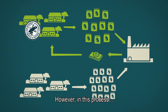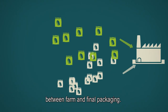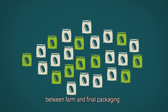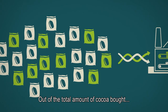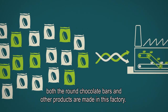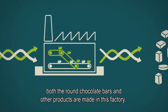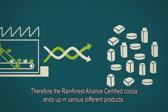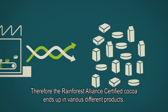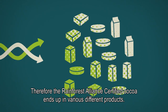However, in this process, the certified and non-certified cocoa get mixed somewhere between farm and final packaging. Out of the total amount of cocoa bought, both the round chocolate bars and the other products are made in this factory. Therefore, the Rainforest Alliance certified cocoa ends up in various different products.